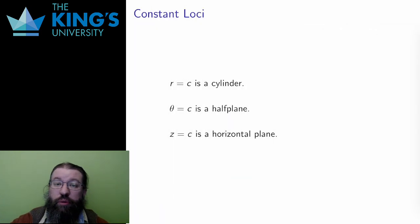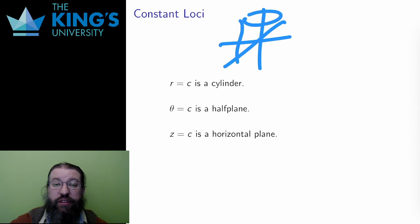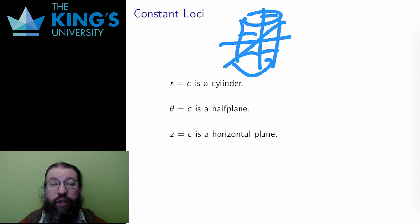To understand the bounds of integration, it is useful to understand what shapes arise when each coordinate is constant. If the radius is constant, then the distance from the z-axis is constant. The height can change and the angle goes all the way around the circle, and the result is an infinitely tall cylinder of radius c around the z-axis. This is the cylinder that the coordinates are based on.